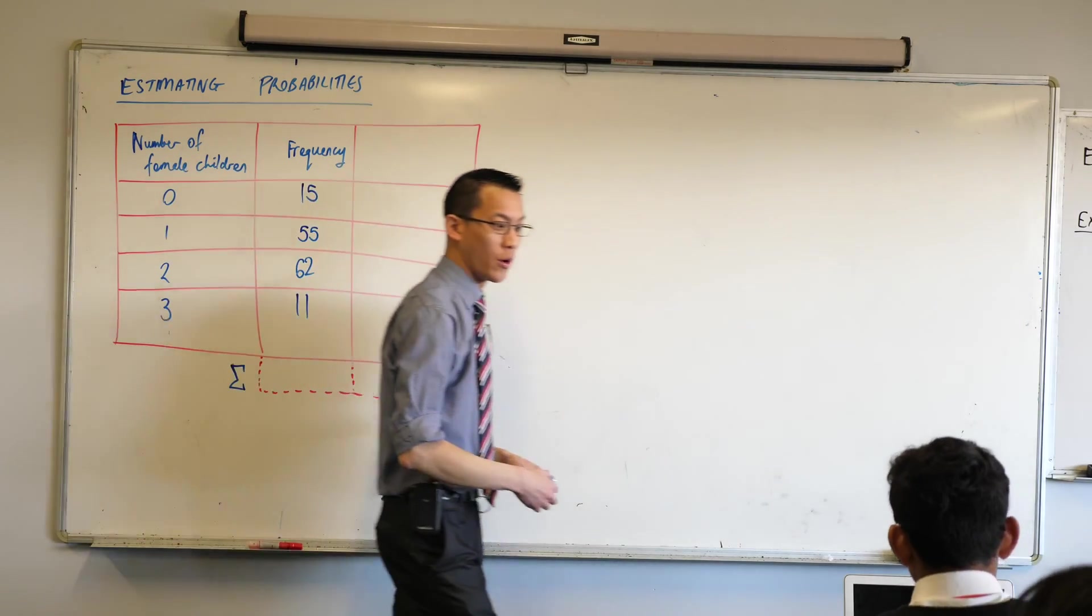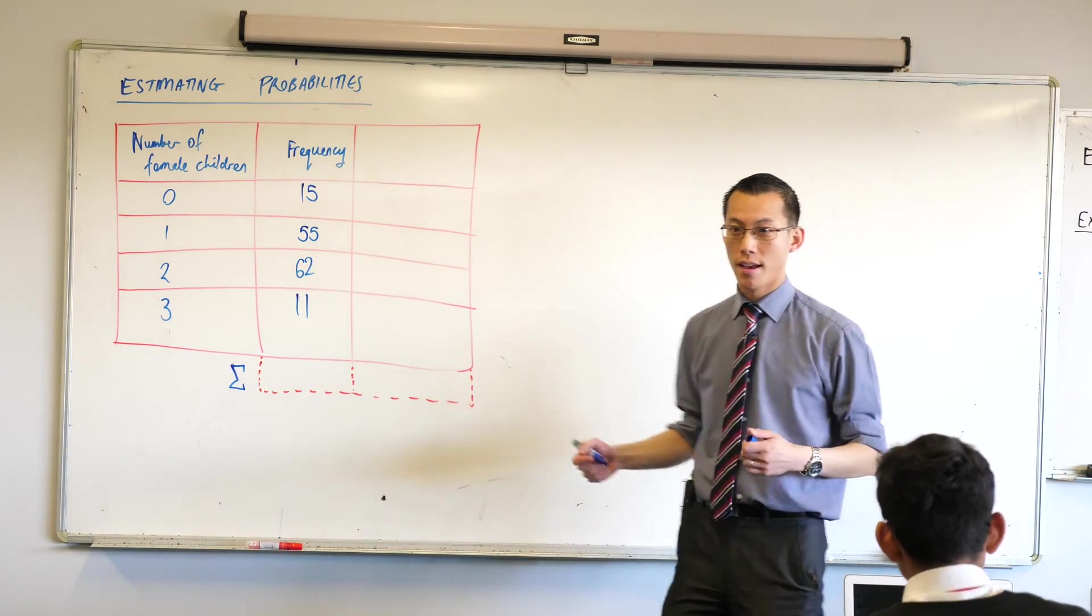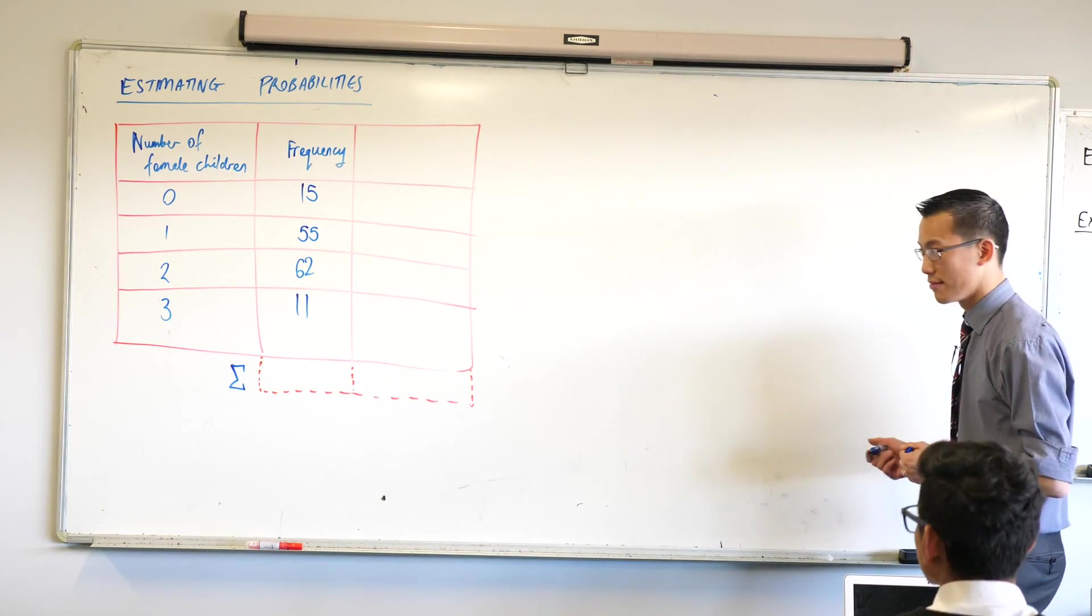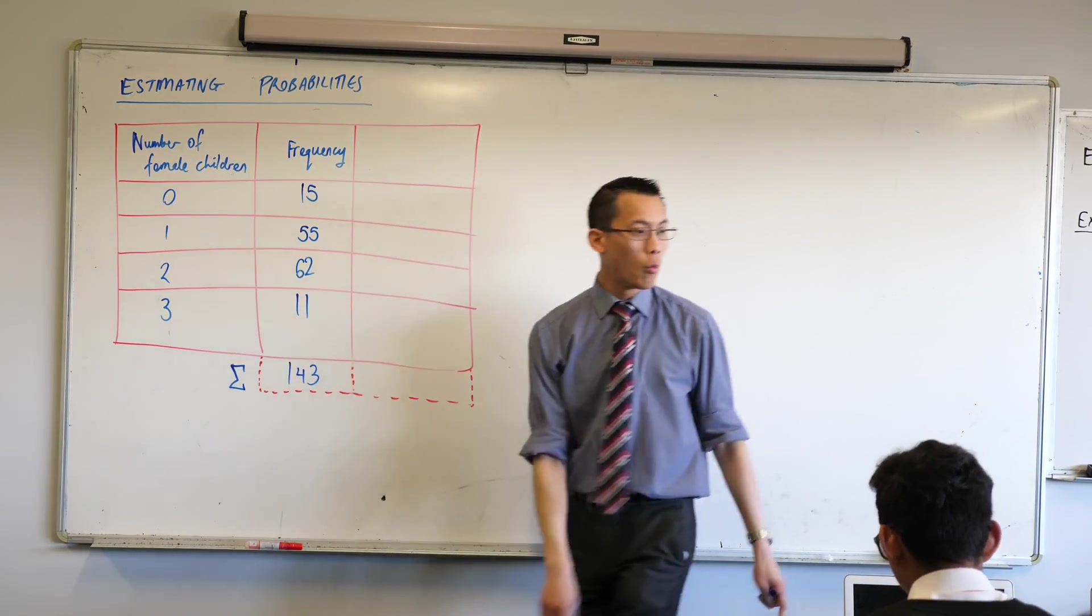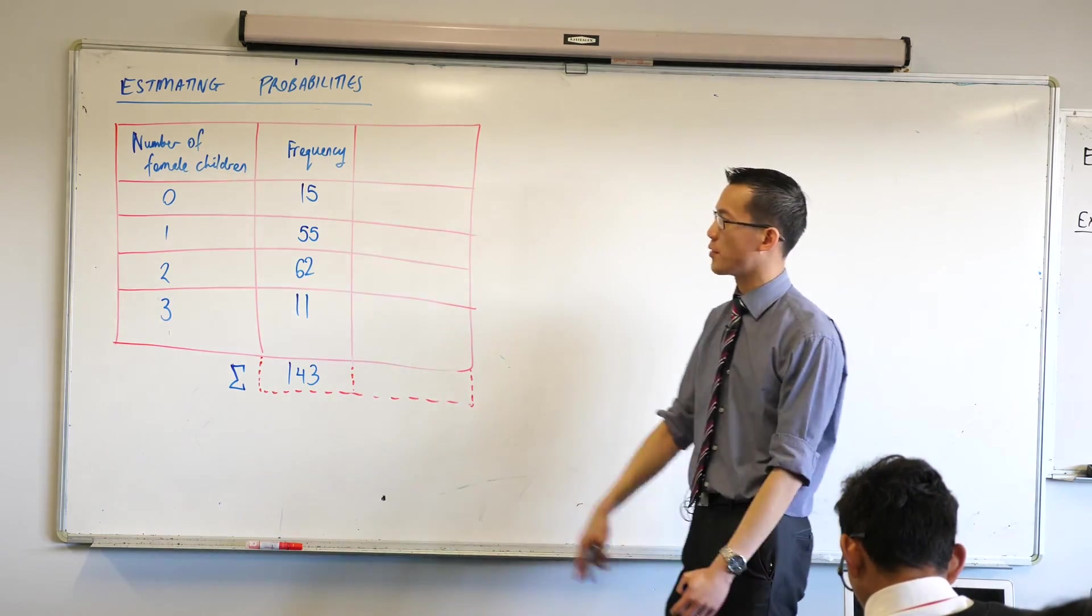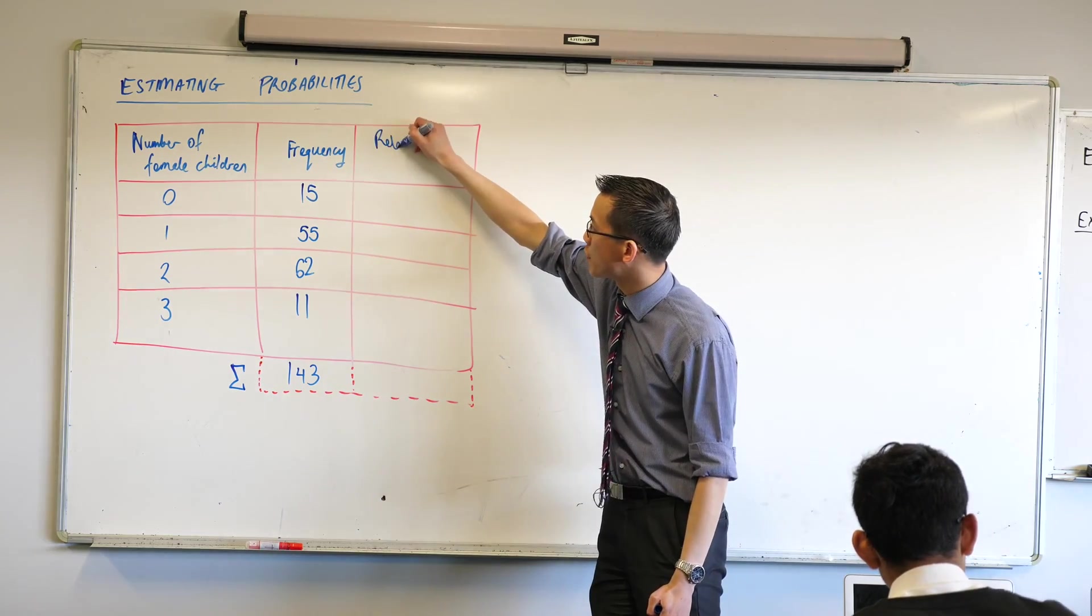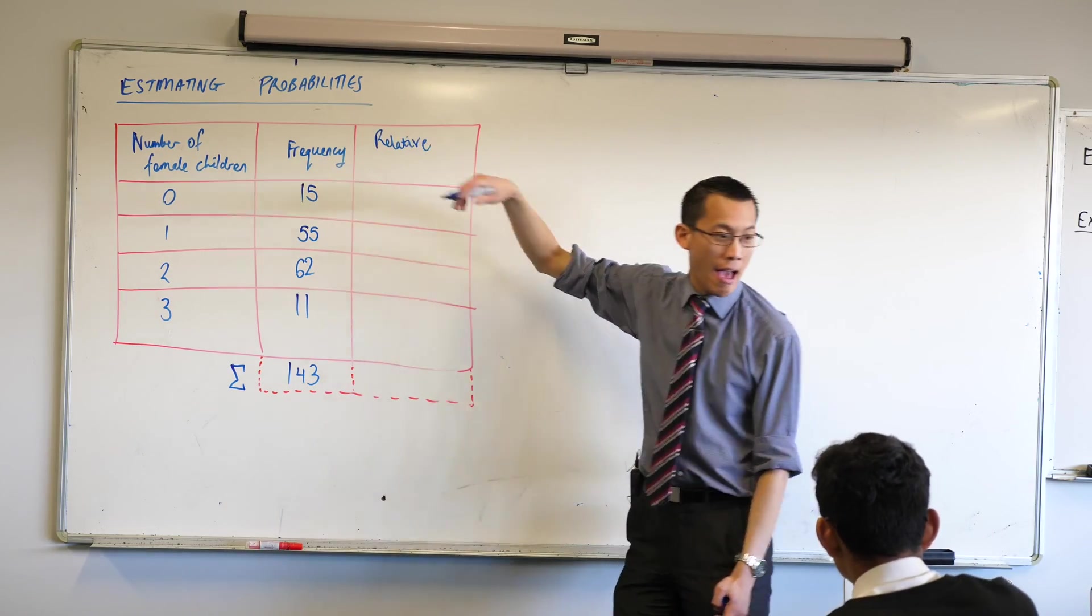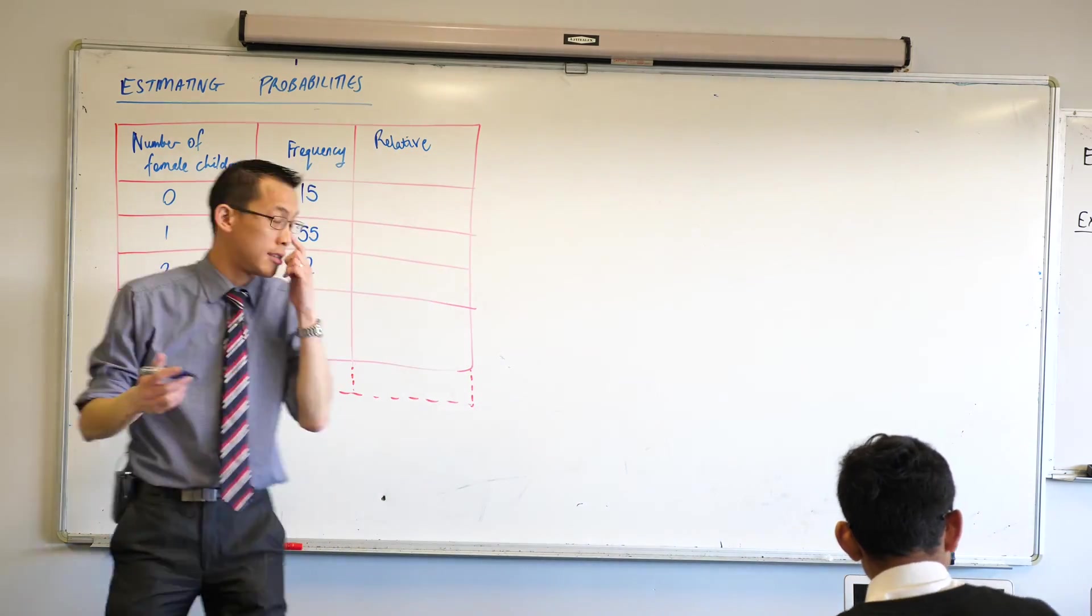Has anyone already worked out how many there is if you add up all of those? 143 is what I got as well, very good. So what we are calculating, just to sort of refresh your memory from the past few years of thinking about this probability, what we're now going to do is relative frequency. How frequently do these occur relative to all the other things that are existing in this situation?